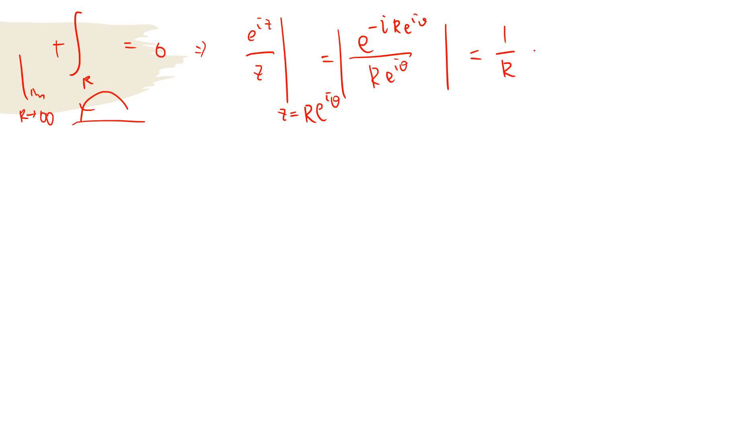If you take the absolute value, the absolute value becomes exponential minus r sine theta, and this is 1 divided by R, so this is suppressed by R.